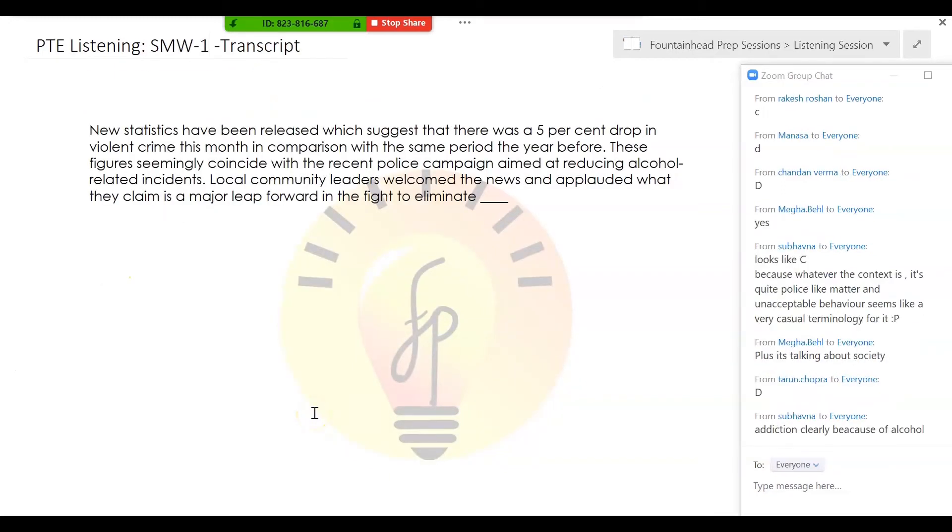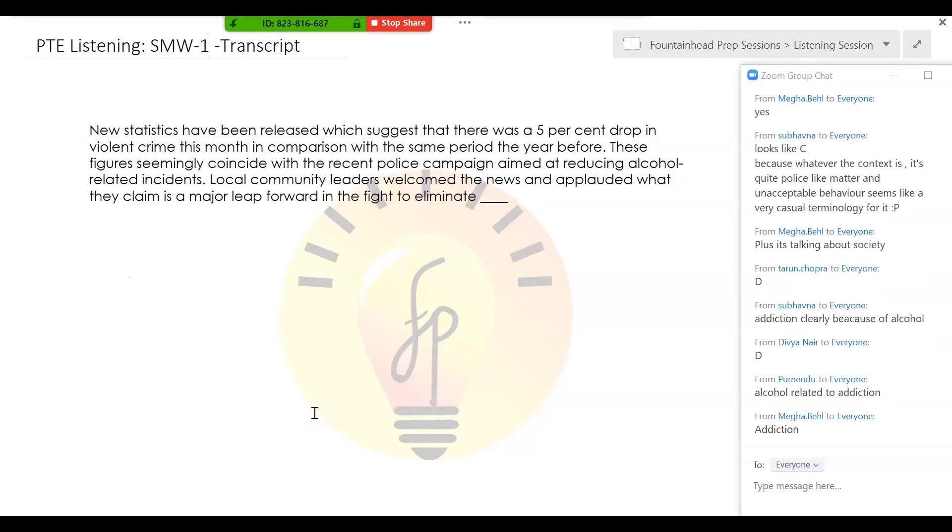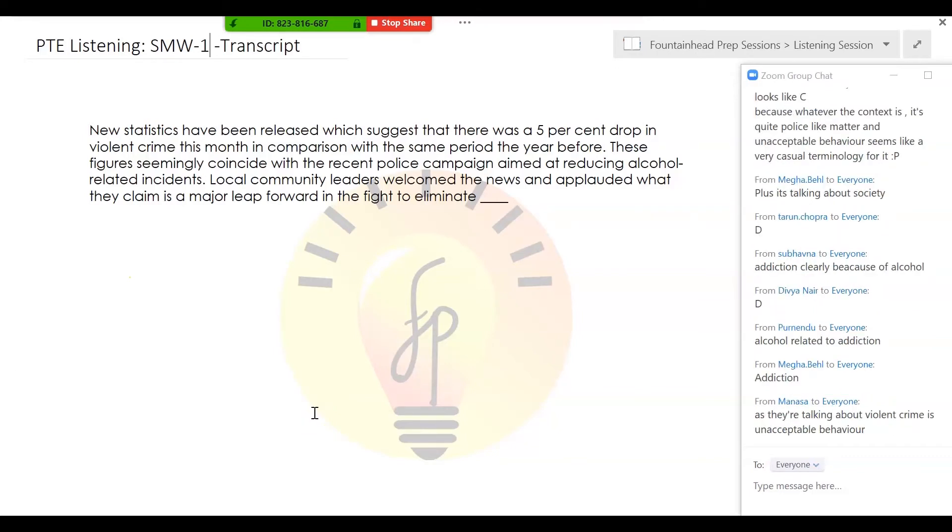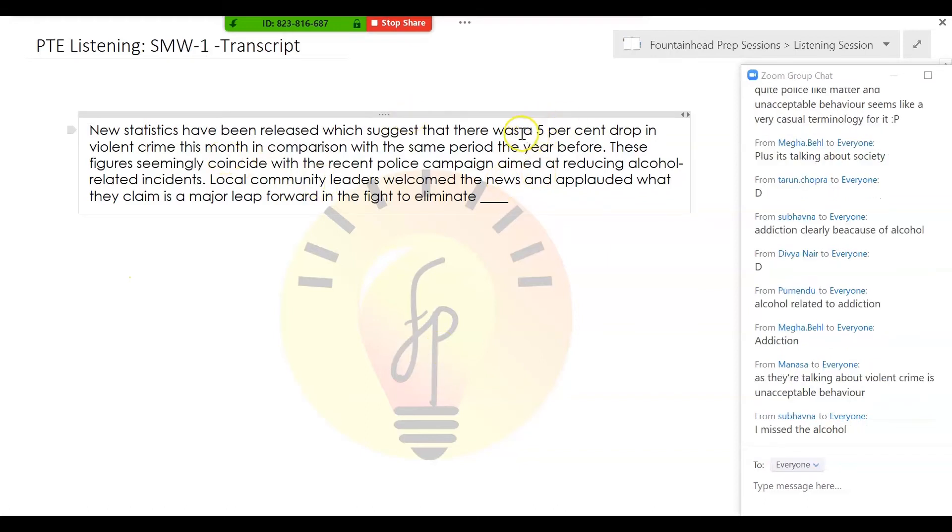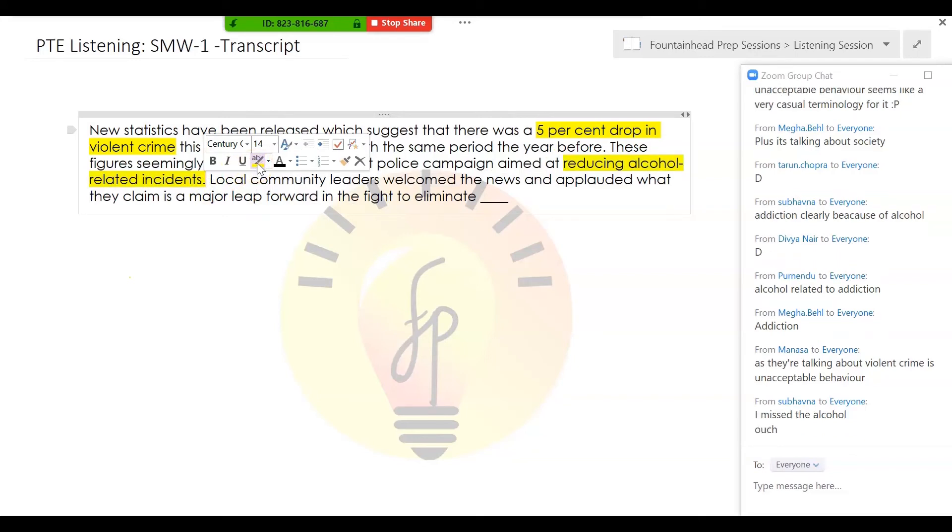Parents, why do you think it's B? Context. Understand the context. Violent crime. Okay. So these figures, there was a 5% drop in the violent crime this month with the same period of the year before. These figures simply consider the recent police campaign reducing alcohol-related incidents. Alcohol-related incidents. We are not talking about addiction. Clear?